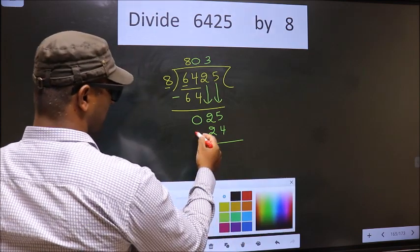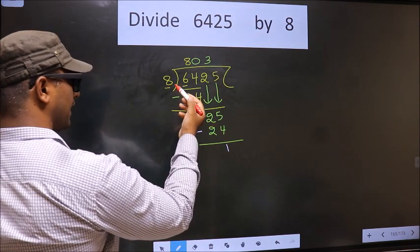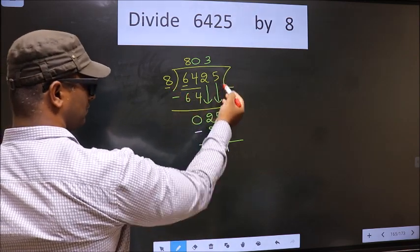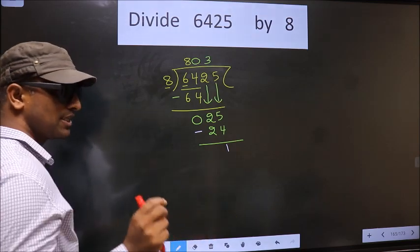Now you subtract. 25 minus 24 is 1. 1 is smaller than 8. We don't have any more numbers left to bring them down, so this is where we stop.